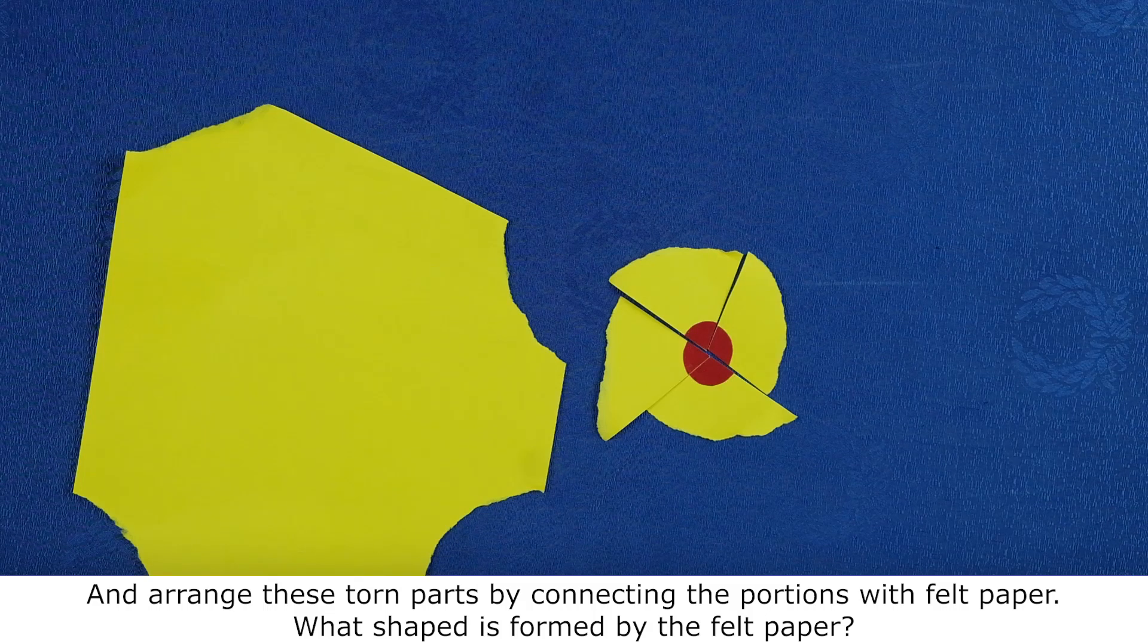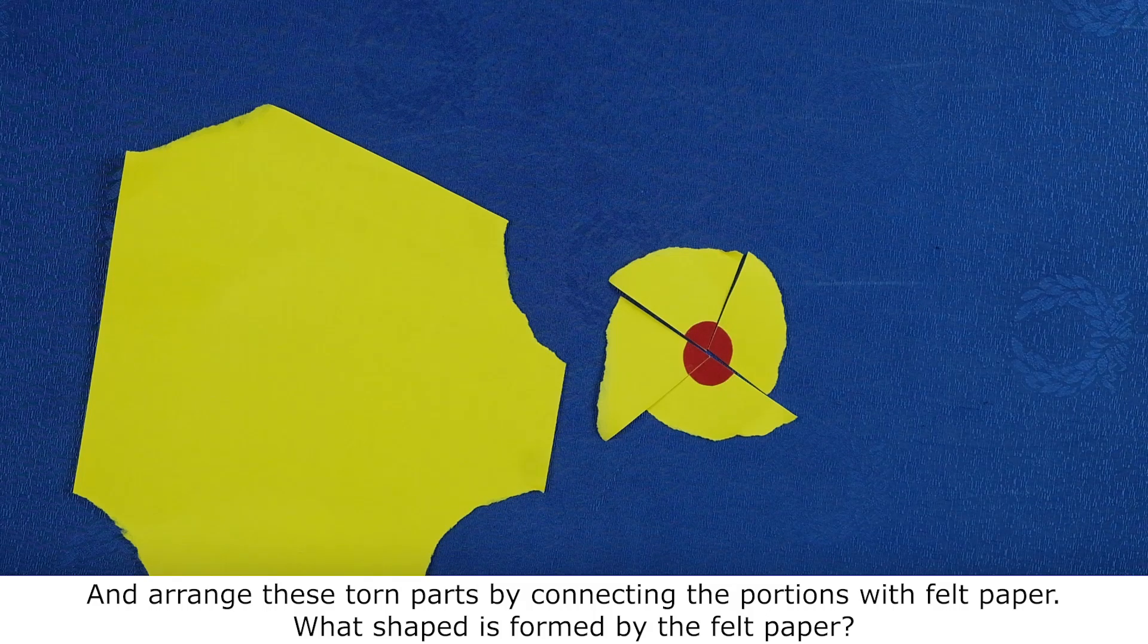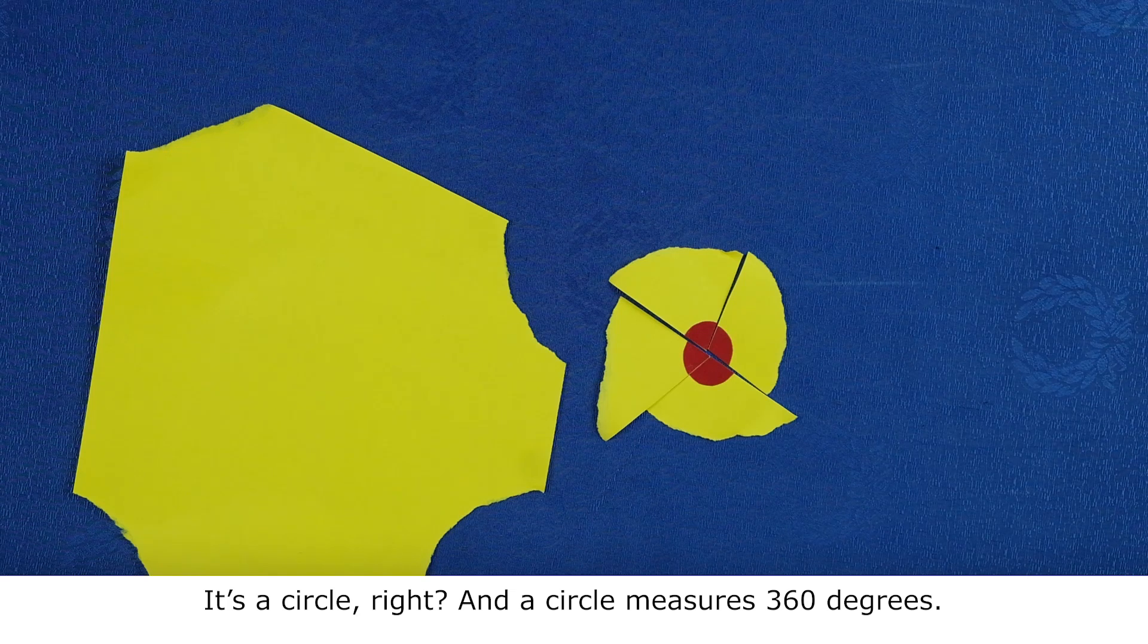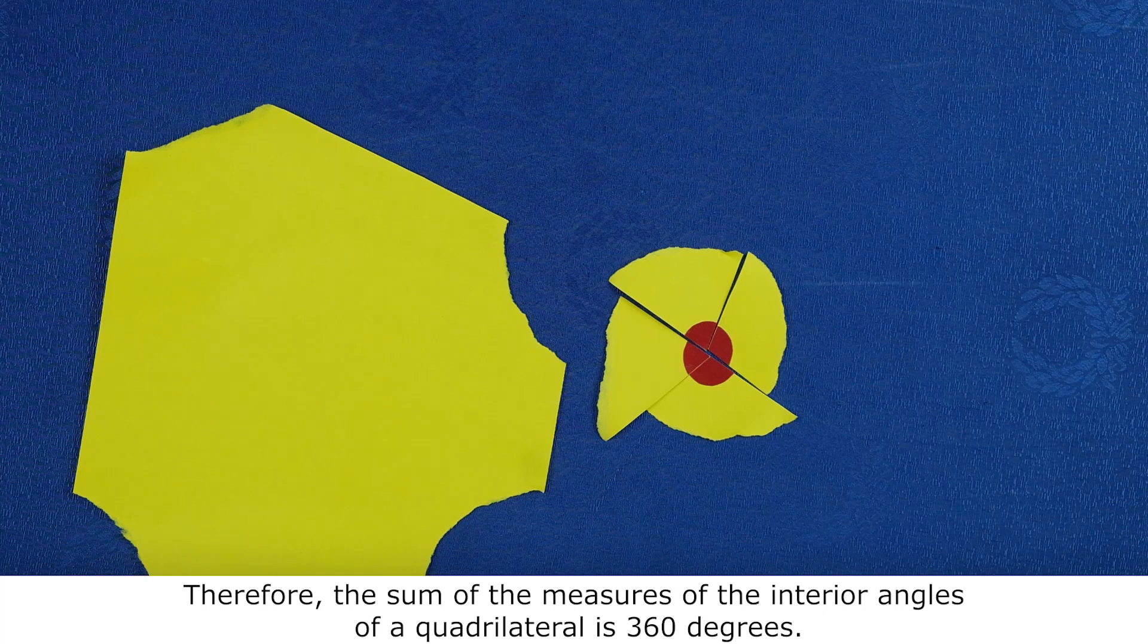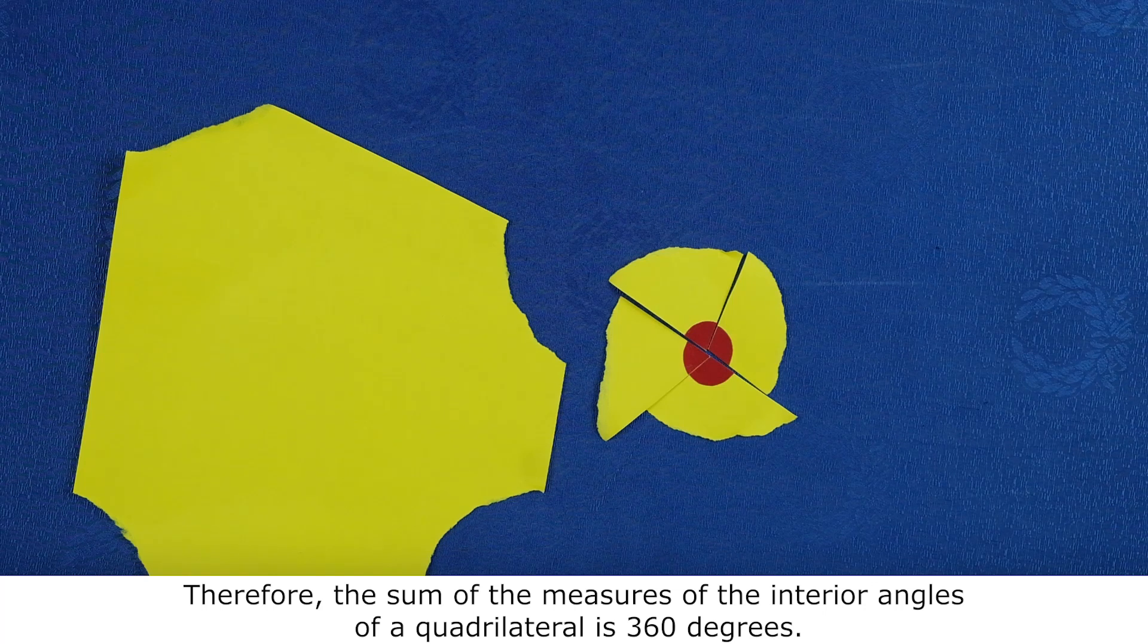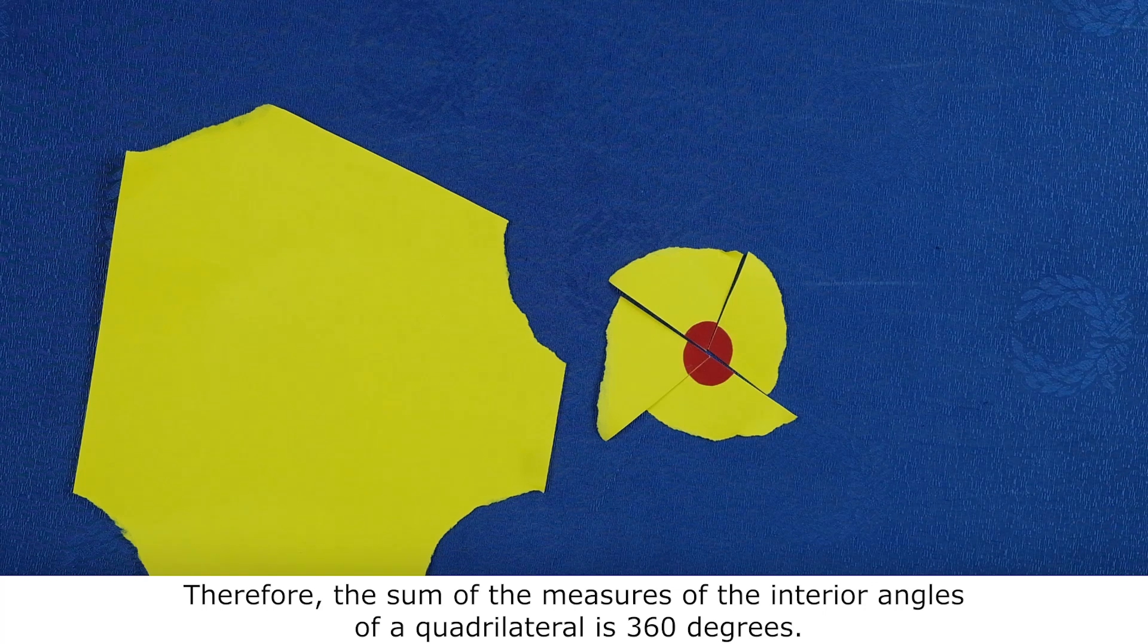What shape is formed by the felt paper? It's a circle, right? And a circle measures 360 degrees. Therefore, the sum of the measures of the interior angles of quadrilateral is 360 degrees.